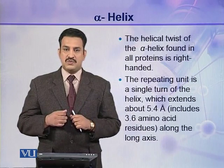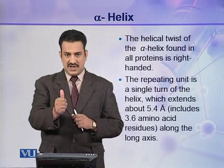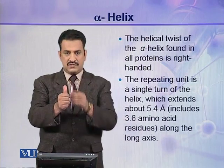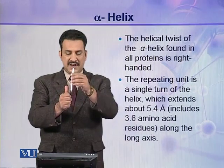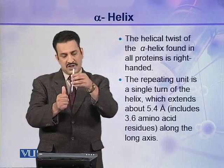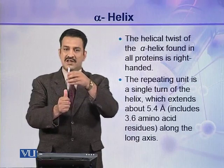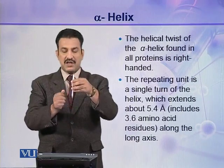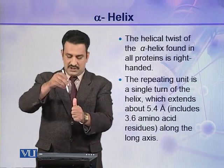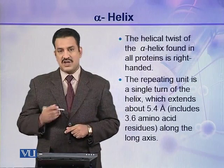To understand right-handed coiling: if the right hand's thumb represents the axis of the helix, then the helix is coiled in the direction of the fingers curling around the thumb. A left-handed coil would go in the opposite direction. The alpha helix in proteins is right-handed.